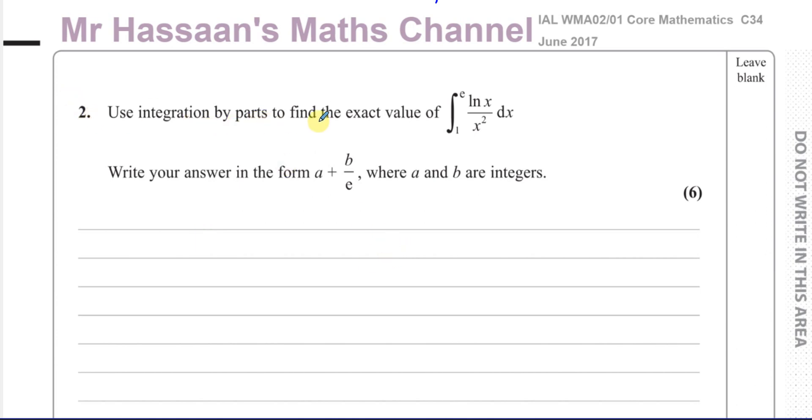We're asked to use integration by parts to find the exact value of the integral between the limits of e and 1 of ln(x) divided by x squared with respect to x, writing the answer in the form a plus b over e, where a and b are integers.